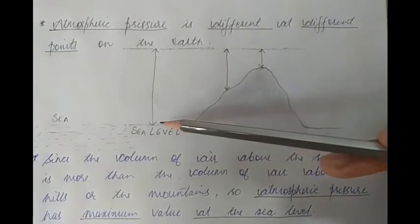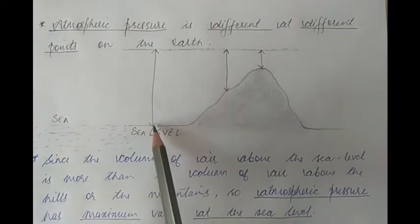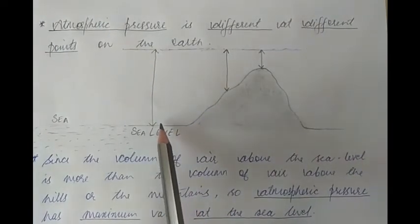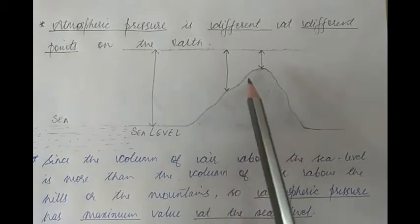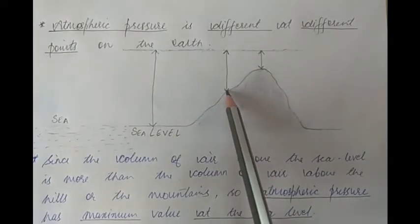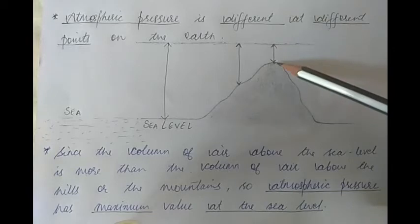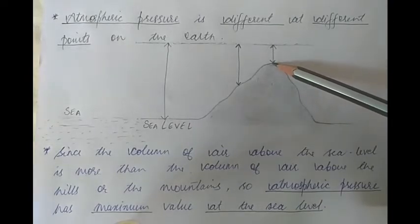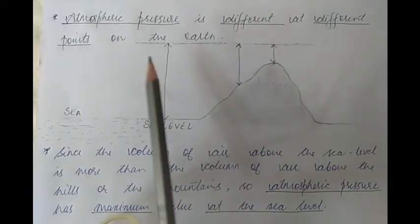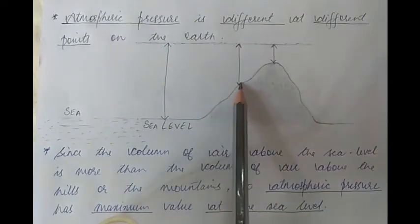Since the height of the air column above sea level is maximum, the weight of that air column is also maximum. Since pressure at a point is due to the weight of the air column above it, atmospheric pressure is maximum at sea level. As we climb up hills and mountains, the air column decreases, so its weight decreases, and thereby atmospheric pressure decreases. At the mountain peak the air column height is least, so atmospheric pressure is least there.